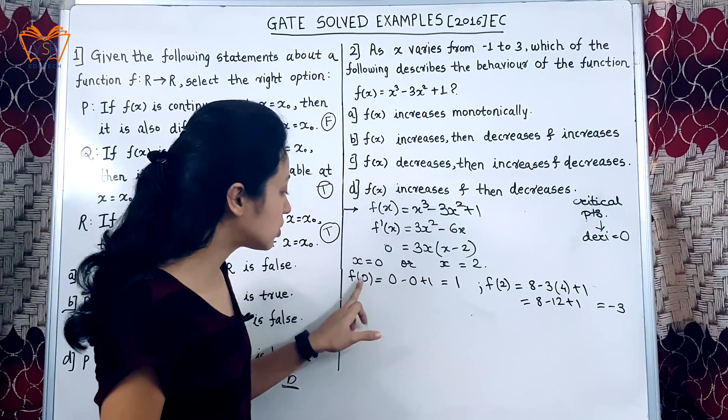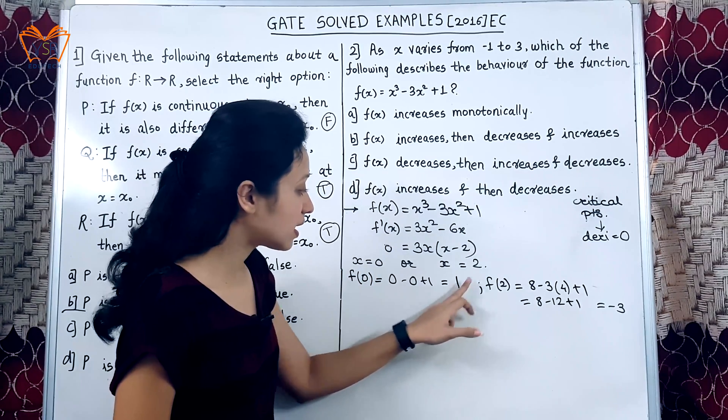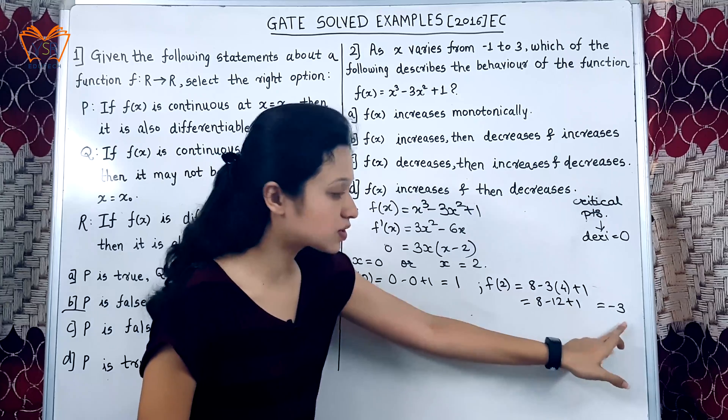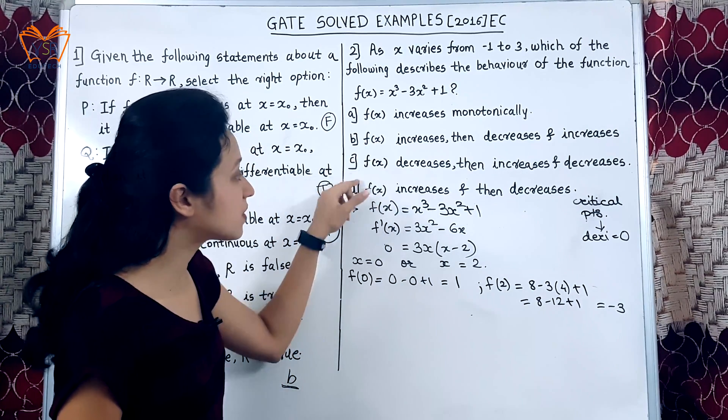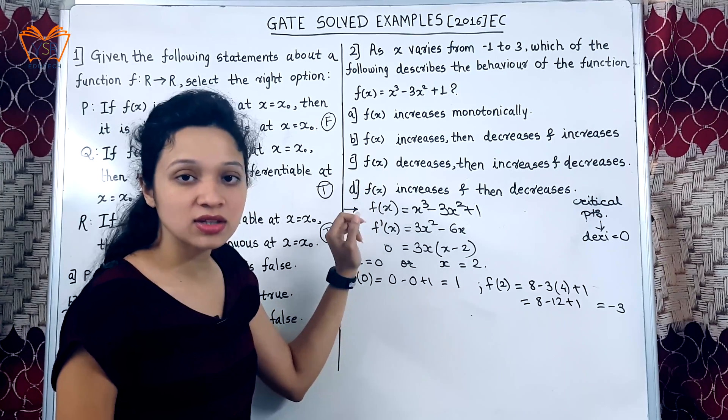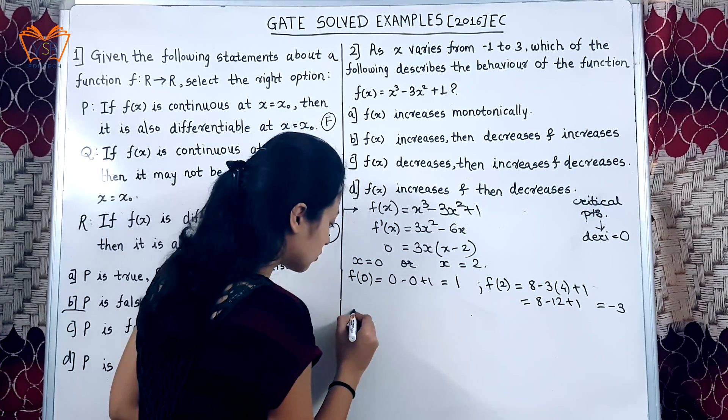8 minus 12 this will be minus 3. Now, at x equal to 0, the value of function is 1. At x equal to 2 the value of function is minus 3. Now, this is sufficient to conclude whether the function at these point is increasing or decreasing. For our clarity what we will do?